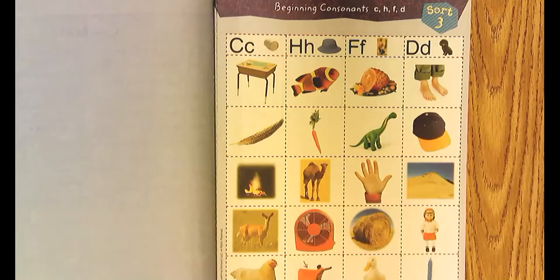We're going to be sorting words with consonants starting with c, h, f, and d.